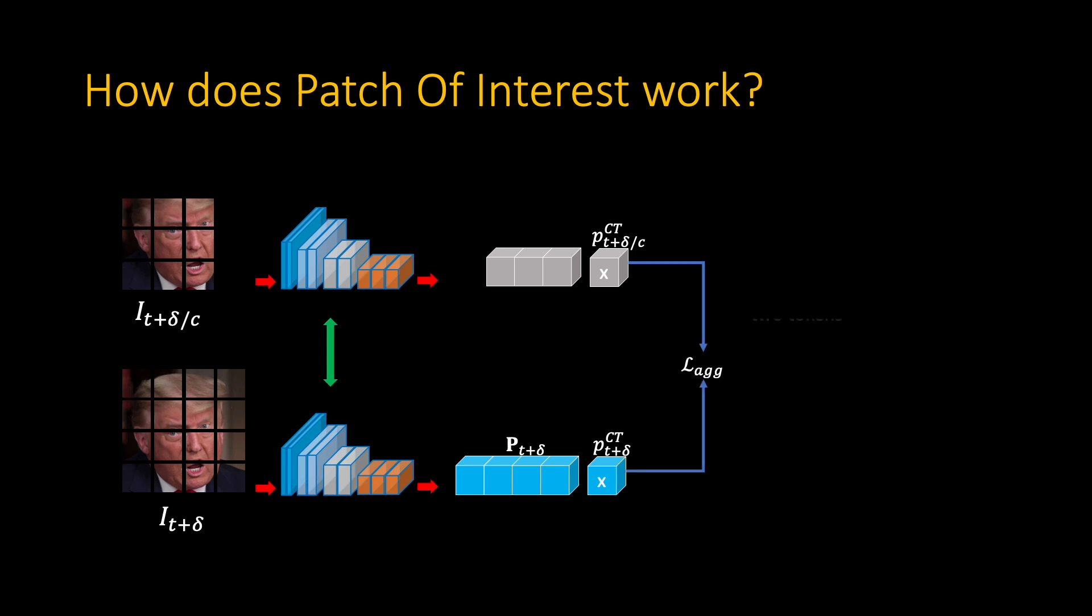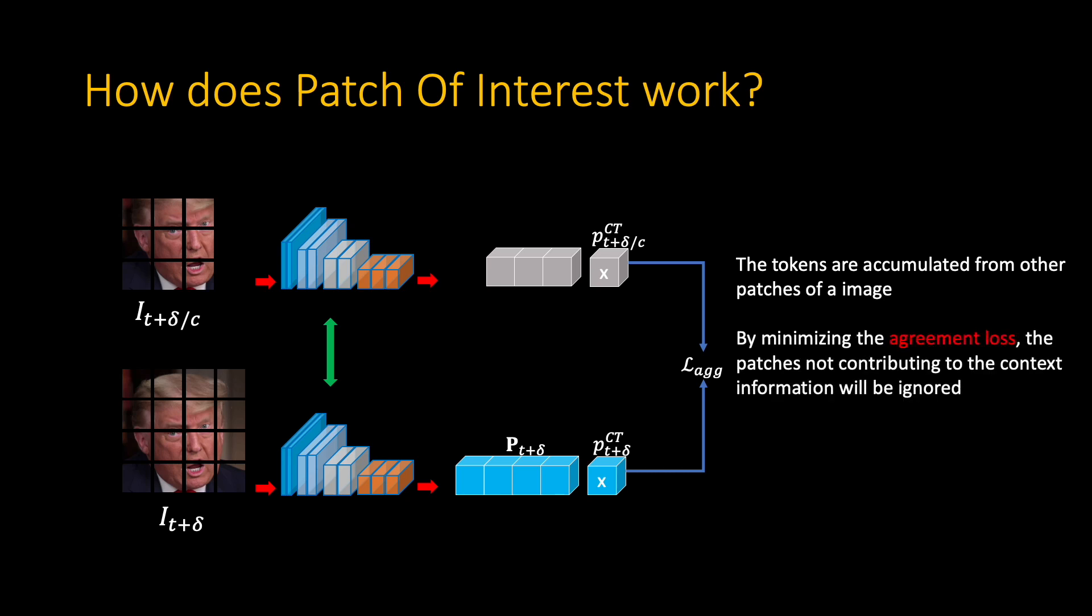The agreement loss is introduced to minimize the difference between two tokens. Since the tokens are accumulated from other patches of an image, by minimizing the agreement loss, the patches not contributing to the context information will be ignored. Only salient patches are important to the contextual token.